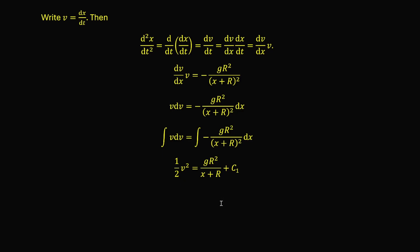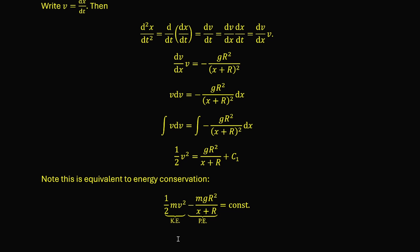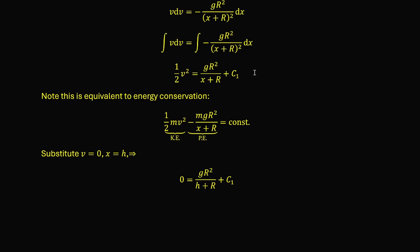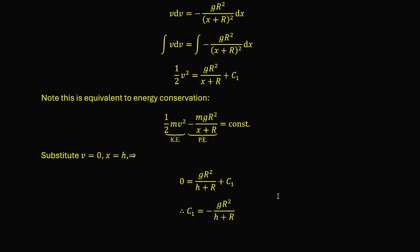We note that this is actually energy conservation: multiplying m on both sides gives ½mv², the kinetic energy, plus the negative of mgr²/(x + r), the potential energy due to gravity, is a constant. Now let's plug in the initial conditions to determine c₁. Setting v = 0 and x = h, we get 0 = gr²/(h + r) + c₁. Therefore, c₁ = minus gr²/(h + r).